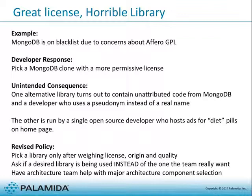A really important question to ask developers when they make a request is whether the desired library is being used instead of a library they really want. If you ask teams why they're using libraries nobody has heard of, and they say 'I wanted to use MongoDB but it wasn't allowed' — that's important information. It should trigger a next level of analysis: people are picking an also-ran or a clone from a sole proprietor that may not have the same review level as a venture-backed company with hundreds of employees and a legal and security team.